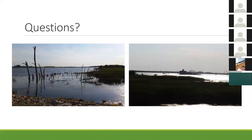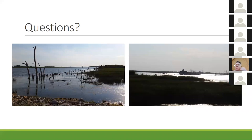Justine asks why the area is called the pothole region. During the last glaciation period, glaciers dug up the landscape, resulting in an area of low spots and depressions throughout it. Interestingly, to the east is the Prairie Coteau region, where the glacial deposits ended up — the highest point in eastern South Dakota. The pothole region is called that because it's dominated by all these little depressions and basins.